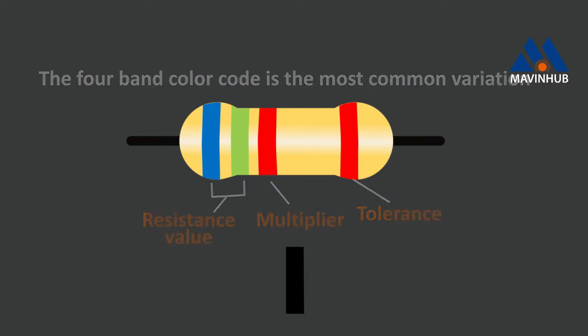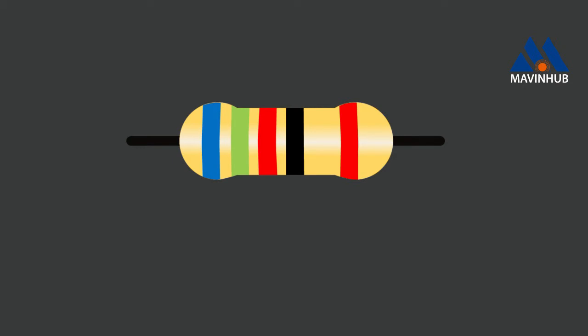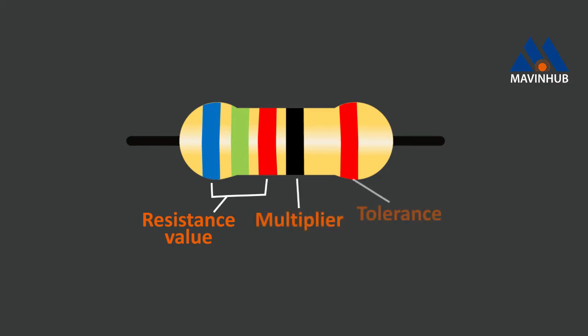Resistors with high precision have an extra band to indicate a third significant digit. The first three bands indicate the significant digits, the fourth band is the multiplier, and the fifth band represents the tolerance.